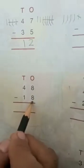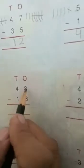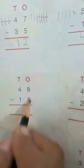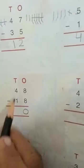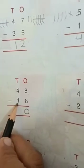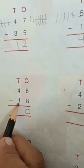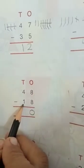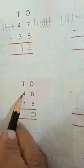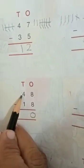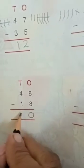Now 48 minus 18: eight minus eight is zero. Now four minus one.